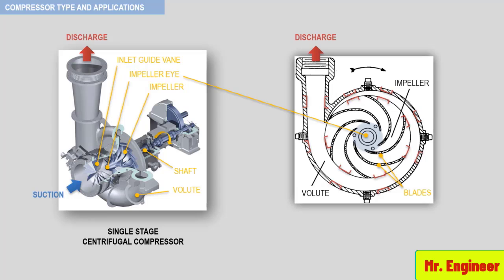The principle of operation of a centrifugal compressor is very similar to that of a centrifugal pump. The gas to be compressed enters the compressor through the inlet nozzle or suction nozzle. The gas is then directed into the eye of the impeller. The impeller is attached to a shaft. The shaft spins and is powered by a driver, which is not shown here. The gas, once it enters into the eye of the impeller, is trapped between the impeller blades. The blades contain the gas and impart speed to it as it passes from the impeller eye toward the outside diameter of the impeller.